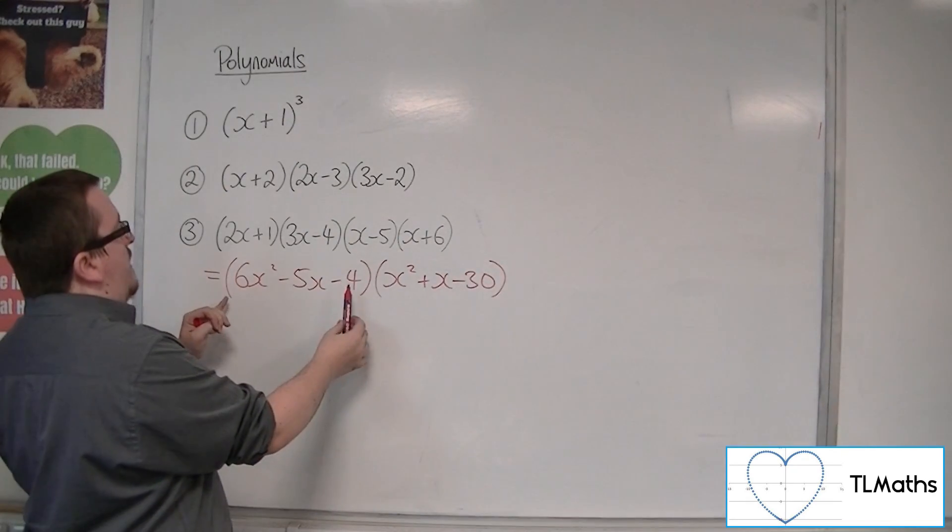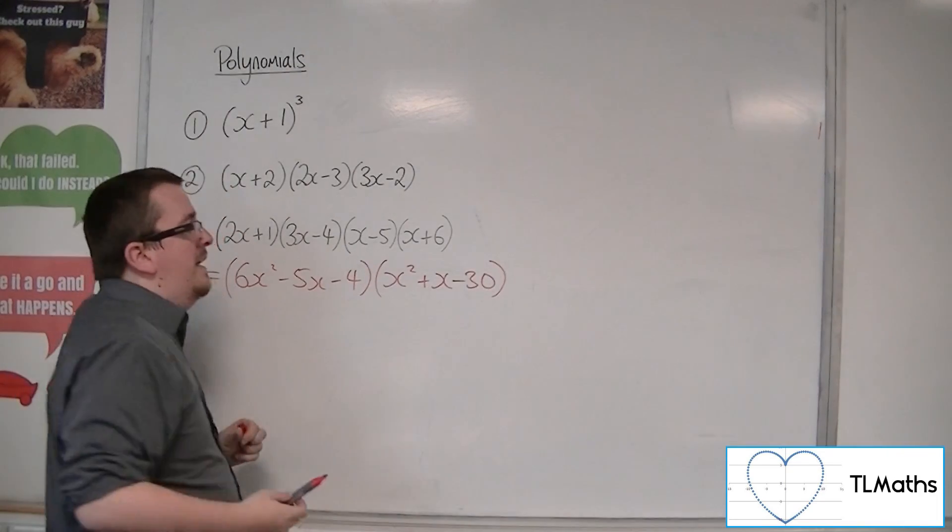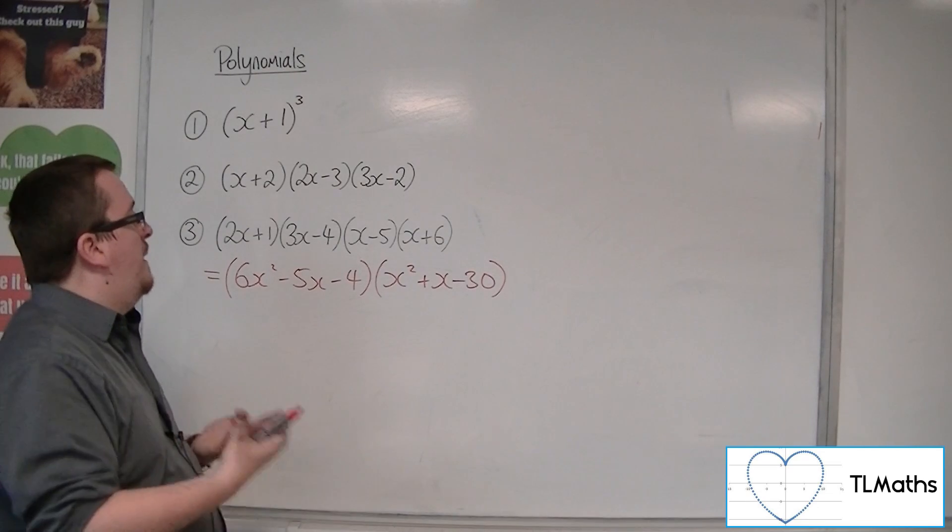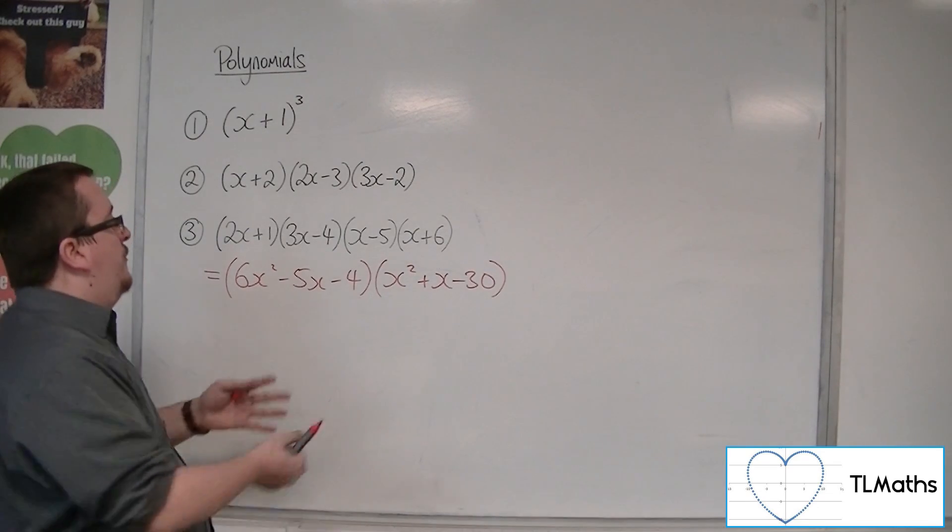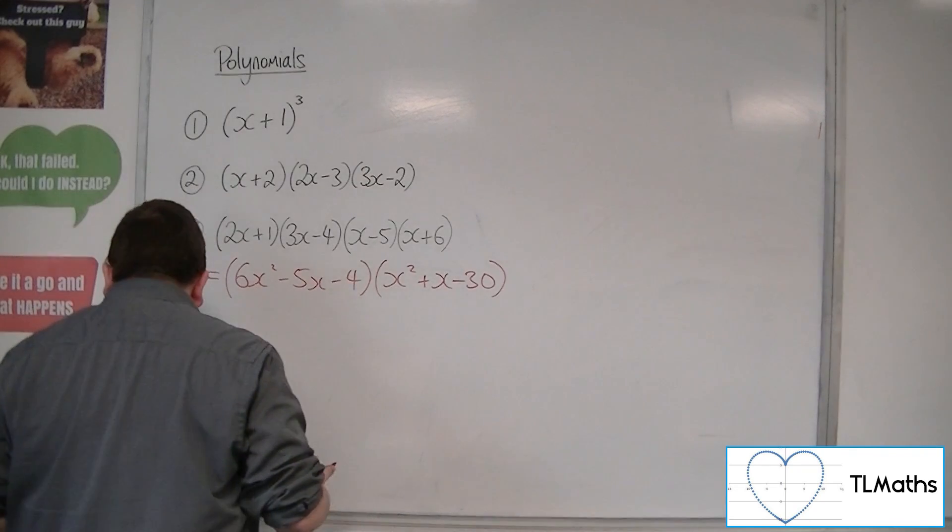Now, the reason why I wouldn't then multiply that one by the next one and then multiply that by the next one is because it just takes longer. So I'm trying to speed this process up a bit. You can use a grid if you prefer to multiply this out.